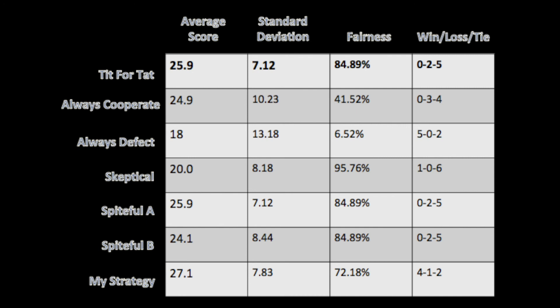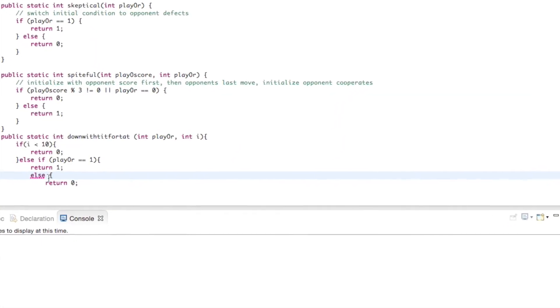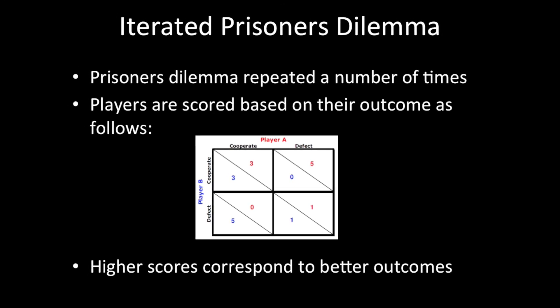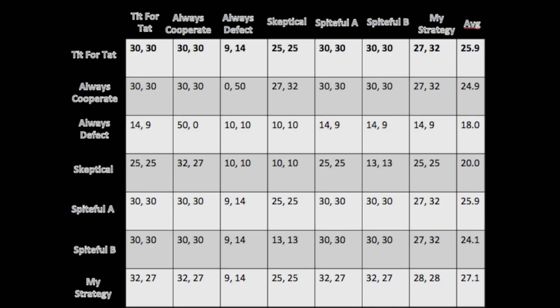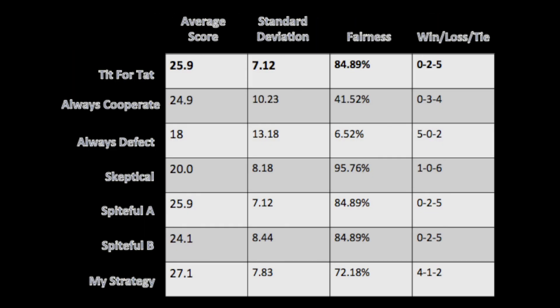When looking at this analytically, it is tough to pick one strategy that is the best. My strategy had a good average score and a good record, but it wasn't as consistent from round to round or fair when compared to the other strategies. To sum up, I was able to use the tools available to me to learn and analyze the prisoner's dilemma. I built my own strategy that focused on winning by looking at what made other strategies work well. I used four different criteria to find that when scoring points isn't everything, the best strategy truly varies depending on the situation in the iterated prisoner's dilemma.